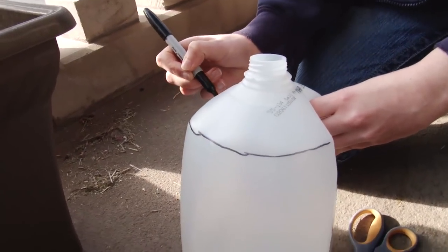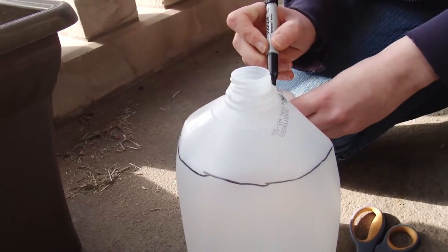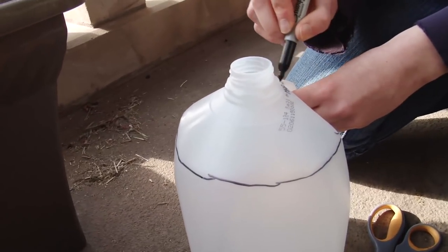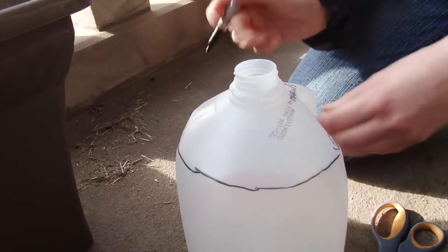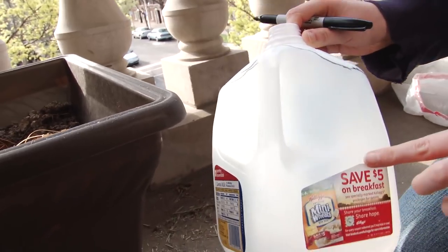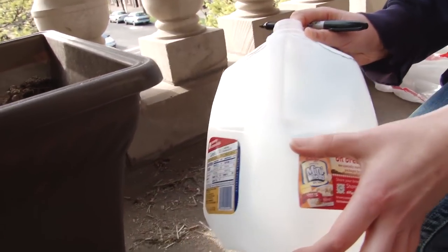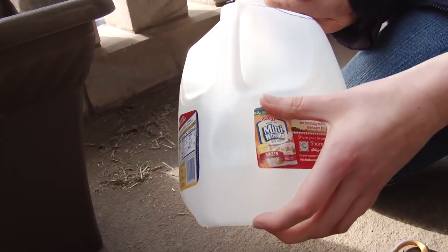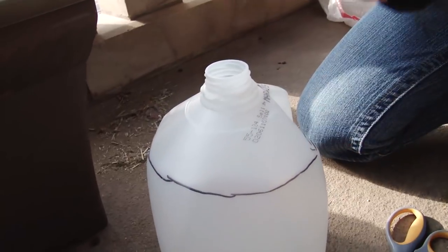I noticed you're preserving the handle - is there a particular reason? We move our plants around, so it's easier to do it by the handle. It also gives more area for soil in there. Otherwise, if you cut the handle off, you're going to cut all the way down here, and that's going to limit how much room you have for soil and what you can plant.